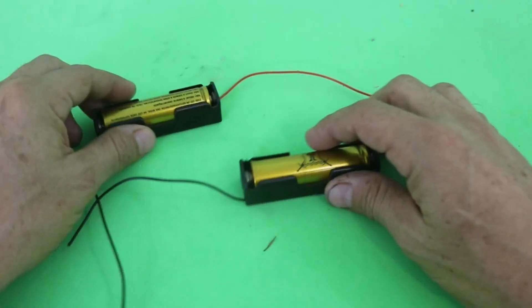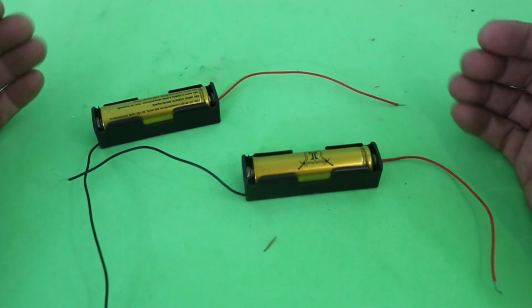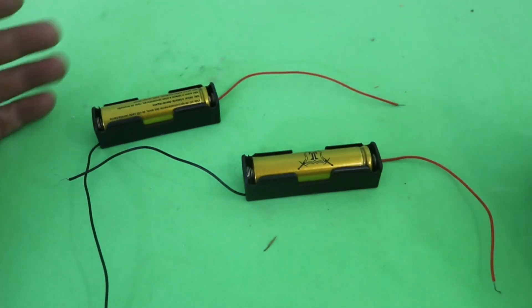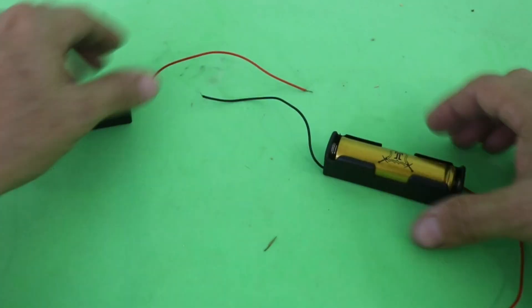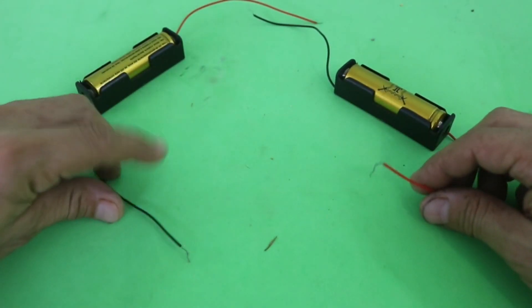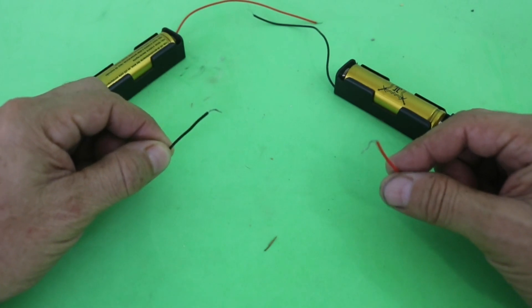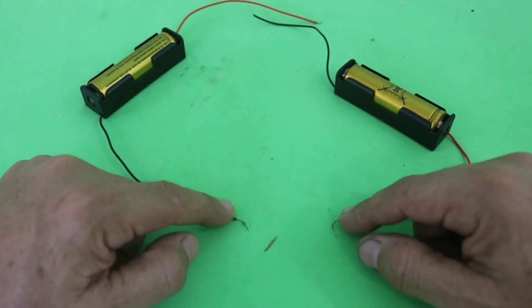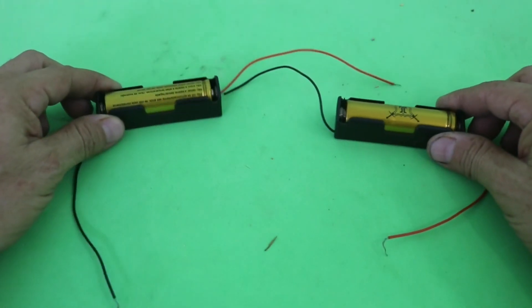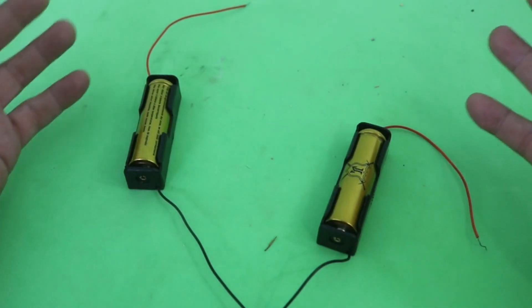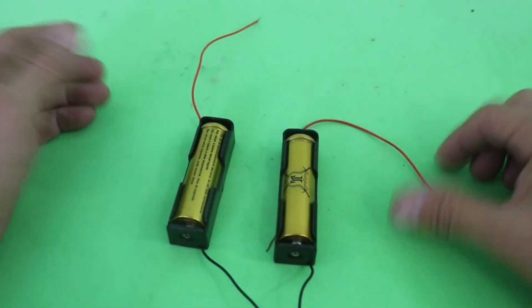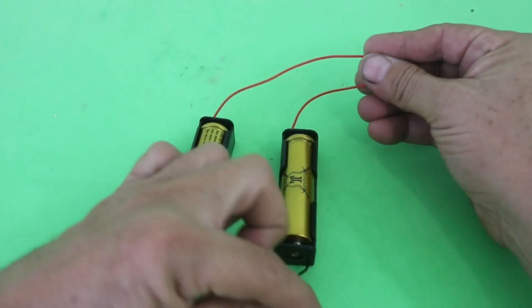Now if we want to have double the voltage and the same current, then we connect positive with negative, and in the other ends of the wires we will have double the voltage and the same current capacity. And we want to do this in a simple way without having to mess directly with the wires.